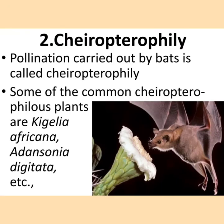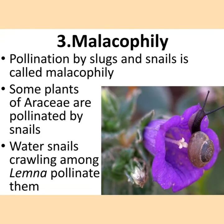What is chiropterophily? Pollination carried out by bats is called chiropterophily. Some of the common chiropterophilous plants are Kigelia africana, Adansonia digitata, etc. What is malacophily? Pollination by slugs and snails is called malacophily. Some plants of Arisaema are pollinated by snails. Water snails crawling among Lemna pollinate them.